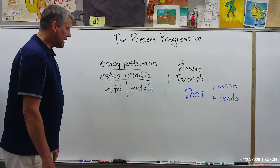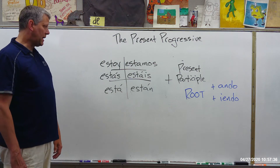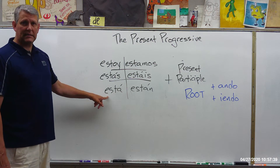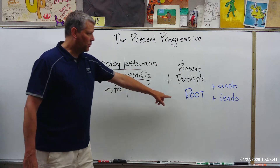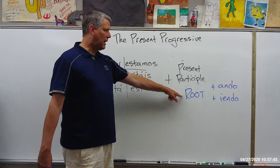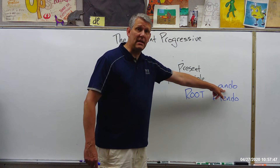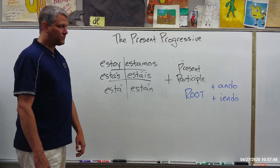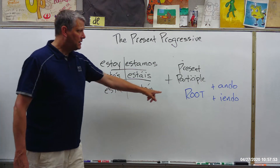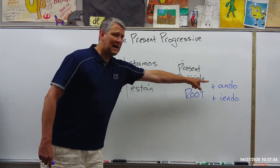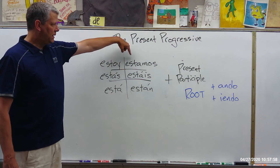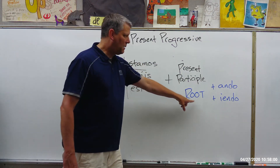Let's try an AR verb — 'trabajar'. I want to say 'he is working': he is → 'está'. The root of 'trabajar', once I drop the AR, is 'trabaj', and then I add A-N-D-O: 'trabajando'. So 'he is working' would be 'está trabajando'. If I wanted to say 'we are working': 'estamos trabajando'.